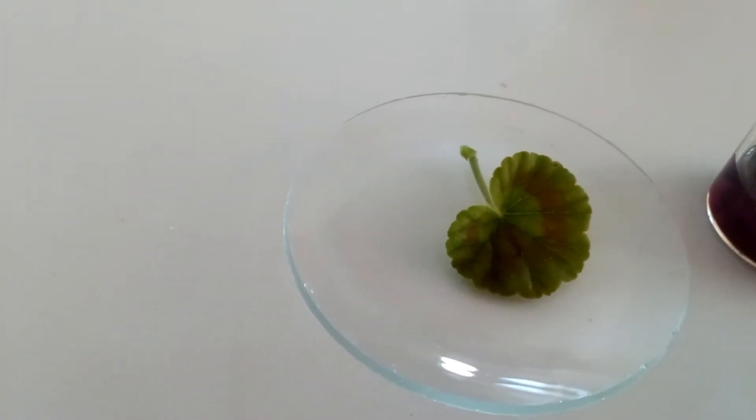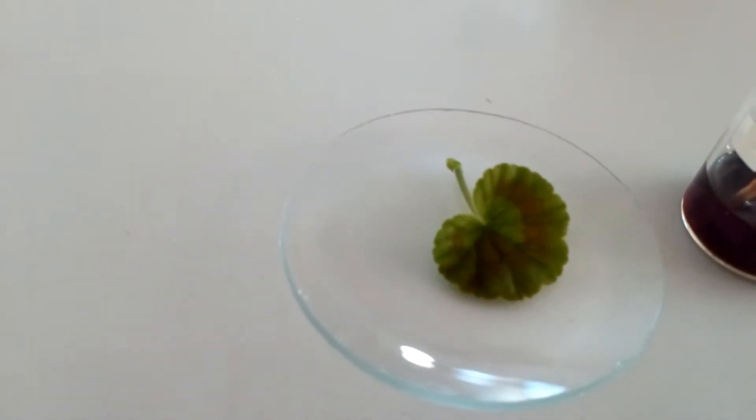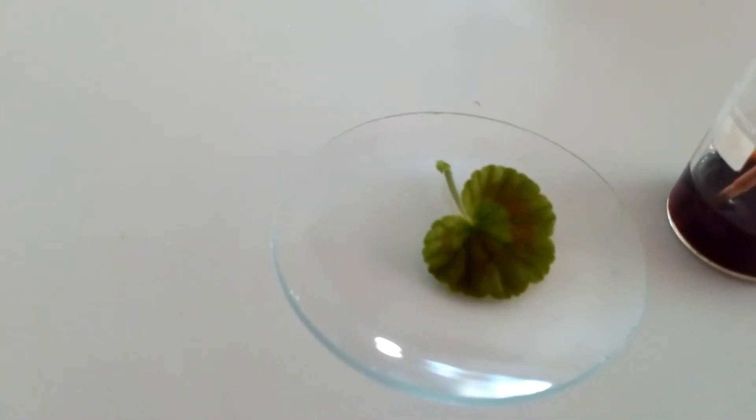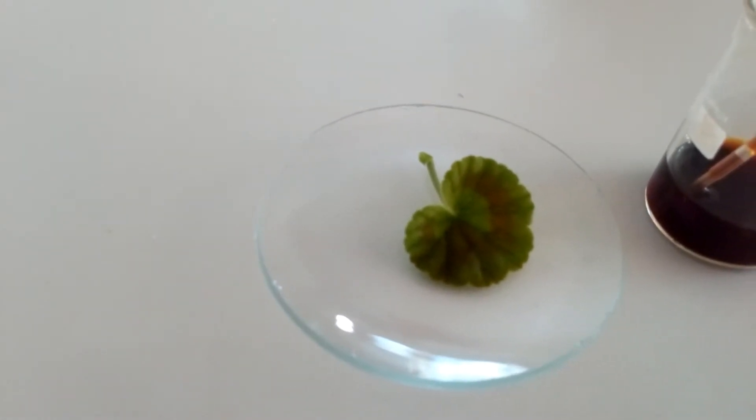So what we need to do is to make the leaf so that it has no green left in it, and we also need to make the cell walls so that they can absorb the iodine solution.